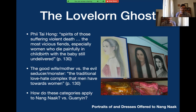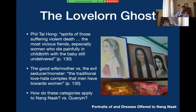P Tai Hong is the most vicious of fiends, especially women who die painfully in childbirth with the baby still undelivered. We can think about what it feels like to give birth to a child — it's difficult, it's transformative, your body has grown, there's this little being inside of you, and then all of a sudden they come out and they're separated. It's a very emotional, very powerful moment. And for somebody to die in that moment would be utterly devastating. In this case too, Nang Nak is so attached to her husband — she misses her husband dearly — and that is another thing that keeps her attached to this world.